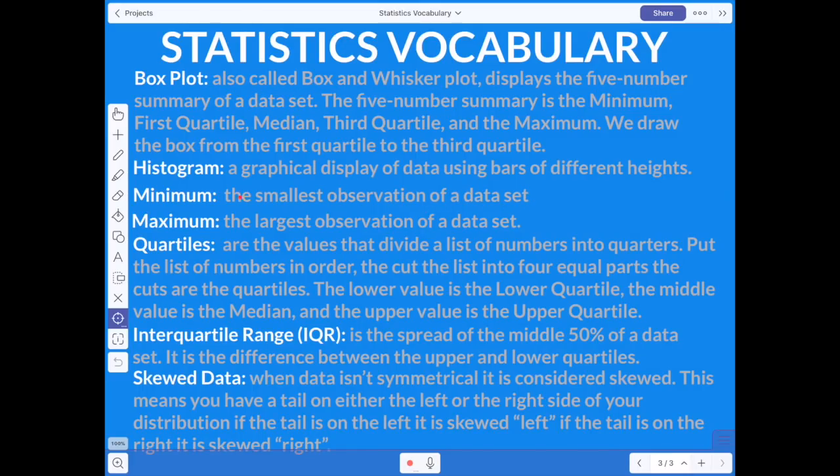The minimum is the smallest observation of a data set. The maximum is the largest observation of a data set. So basically the minimum is the smallest number, the maximum is the biggest number. Your quartiles are the values that divide a list of numbers into quarters. Put the list of numbers in order, then you cut the list into four equal parts. The cuts are called the quartiles. The lower value is the lower quartile, the middle value is the median, and the upper value is called the upper quartile. And we will get more into this if you don't understand this right now. That's completely understandable, but we will go over this extensively.